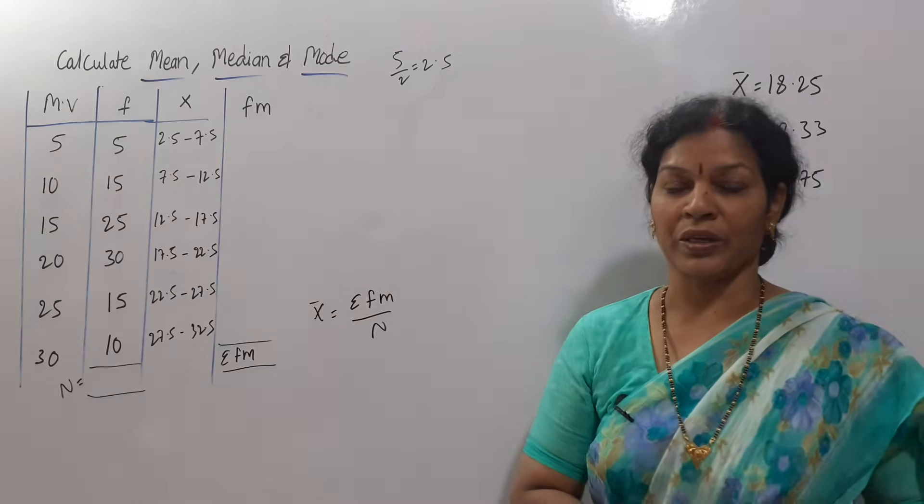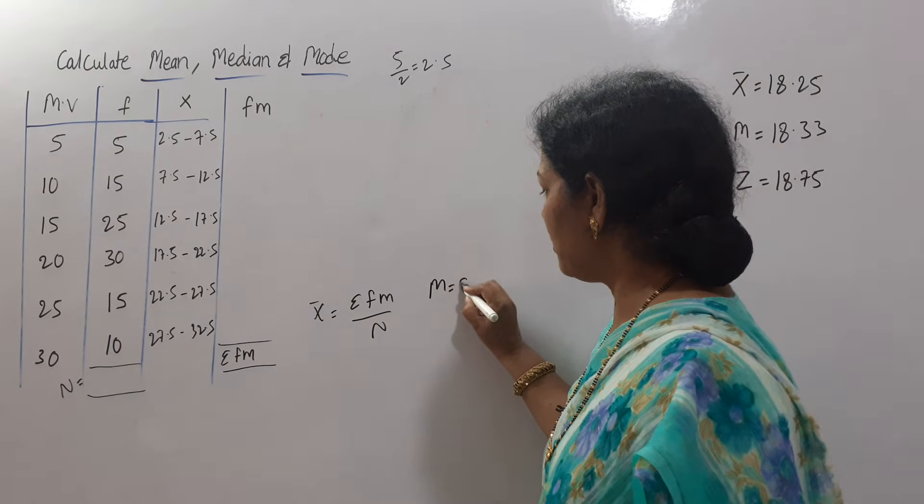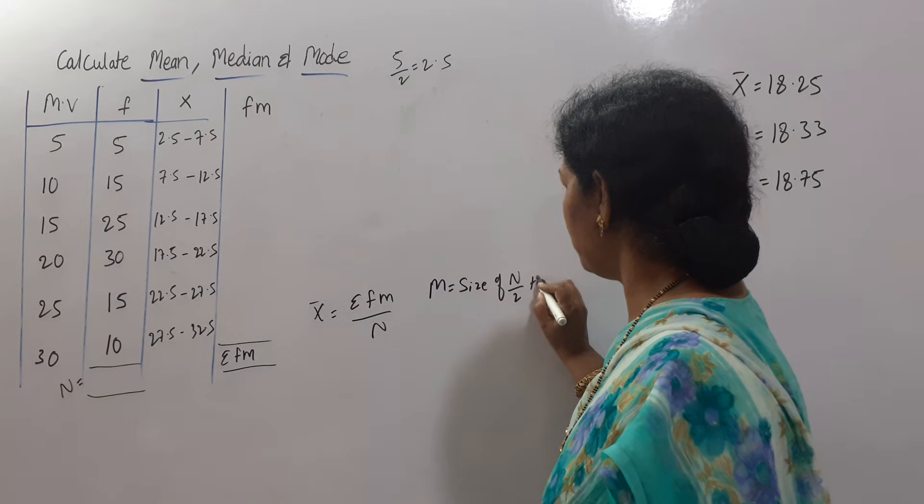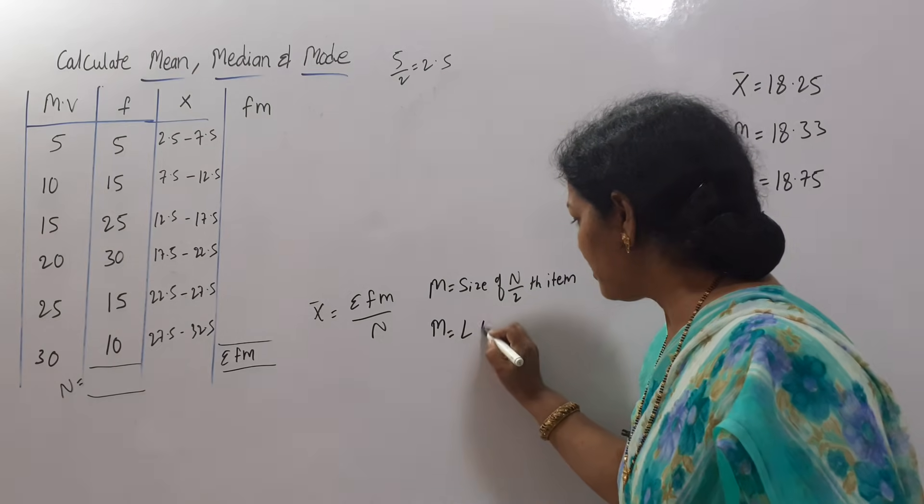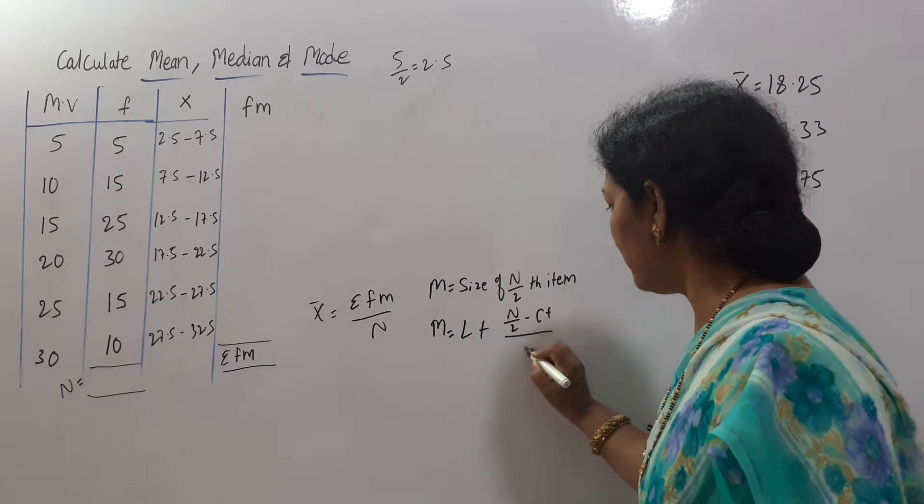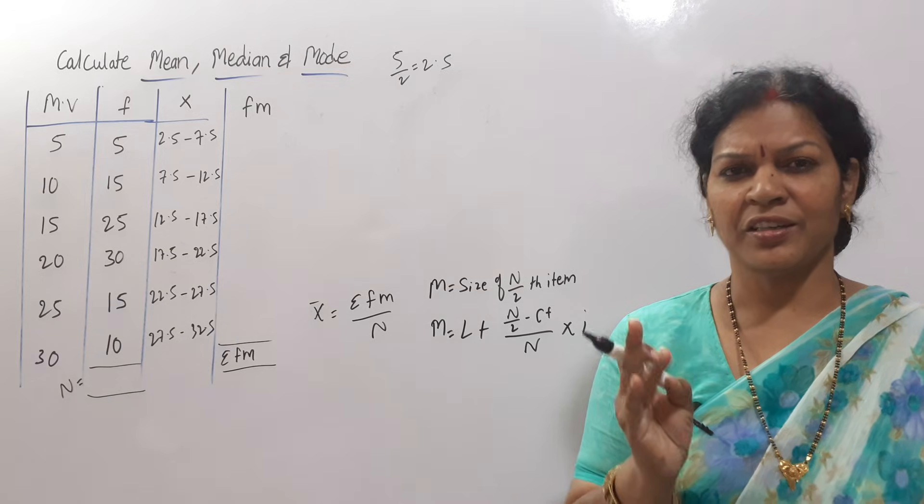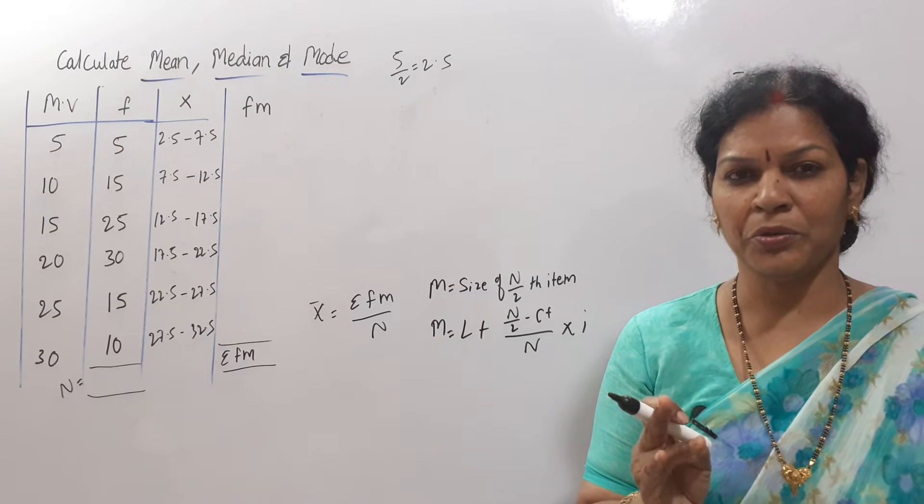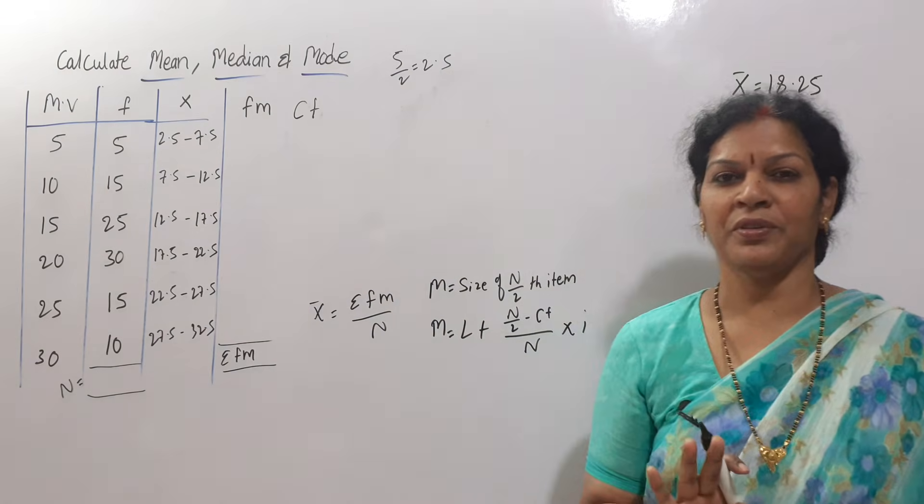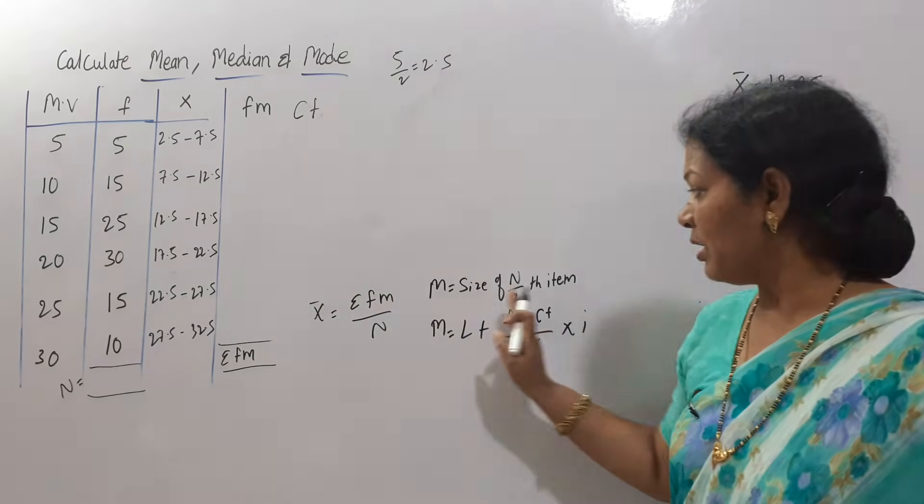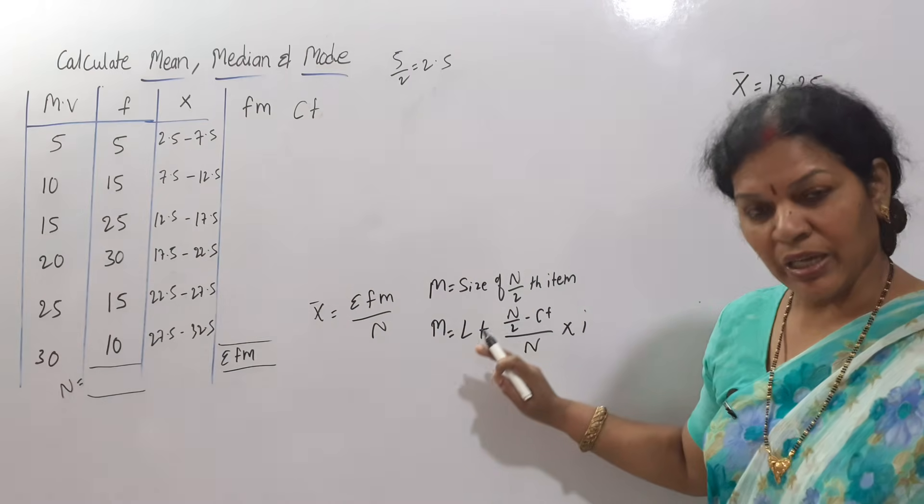Next median. What are the two formulas? First formula is median is equal to size of n by 2 th item. And what is the second formula? M is equal to L plus n by 2 minus cf by n into i. This is the formula. Whenever you want to calculate median, either in discrete series or continuous series, immediately first thing what you have to do is cf cumulative frequency. So I will provide a column for cf. This column is enough. You will get cf, then you will apply the n by 2 th item, wherever it lies in cf you will identify the class interval and you will apply this formula.